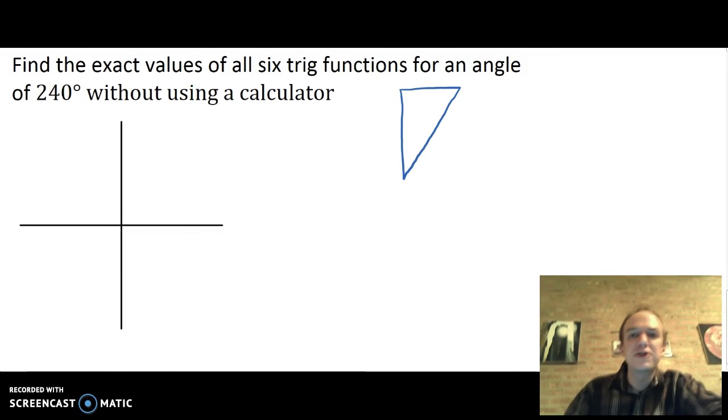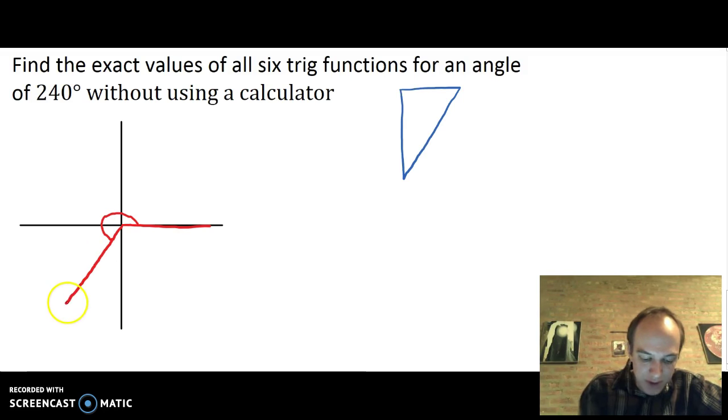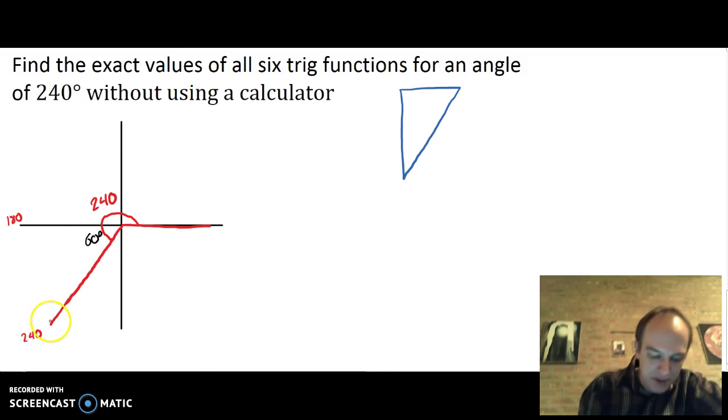Find the exact values of all six trig functions for an angle of 240° without using a calculator. Let's do this a little bit backwards. I'm going to draw the angle first. Initial side. 240 is all the way past 180, almost to 270 but not quite. So I'm going to draw this angle. This is 240. Since this is 180, I need to know how many degrees is it from 180 up to 240. Well, that's 60 degrees. So when I form my reference triangle, like this, what I'm making is equivalent to a 30-60-90 triangle.